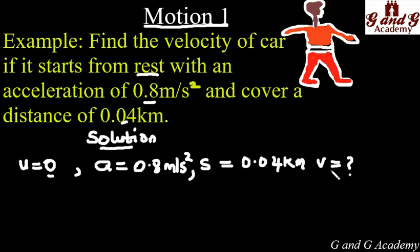You are asked to find v, which is the final velocity. Take note that this distance is in kilometers. You will first have to convert it to meters by multiplying by 1000 to get 40 meters.